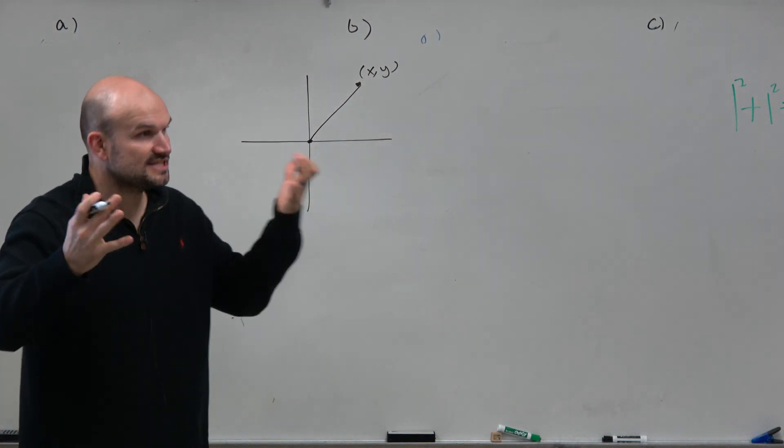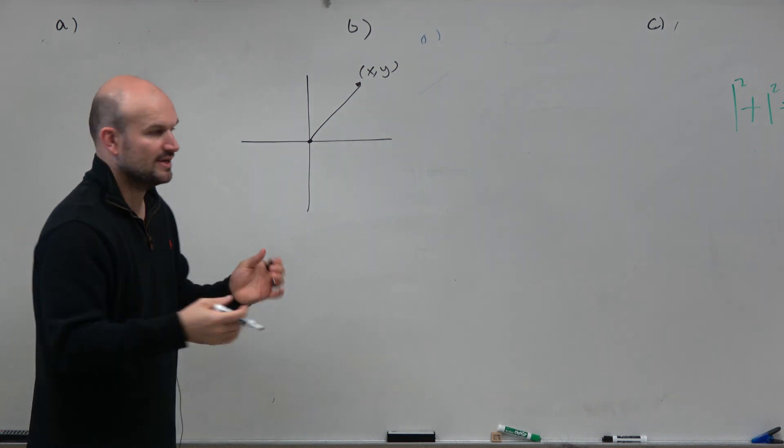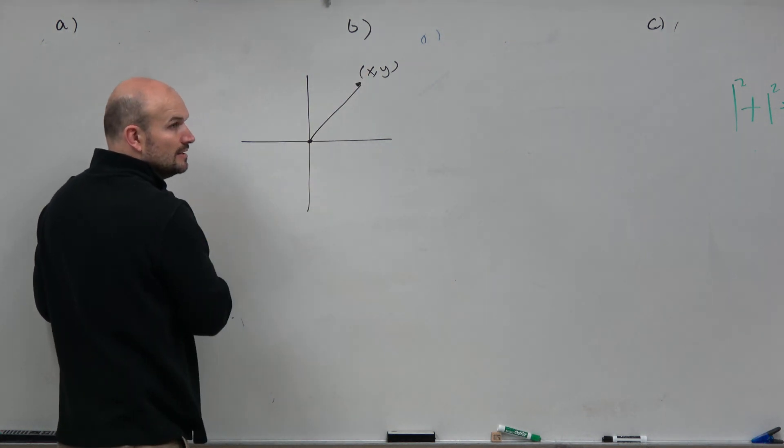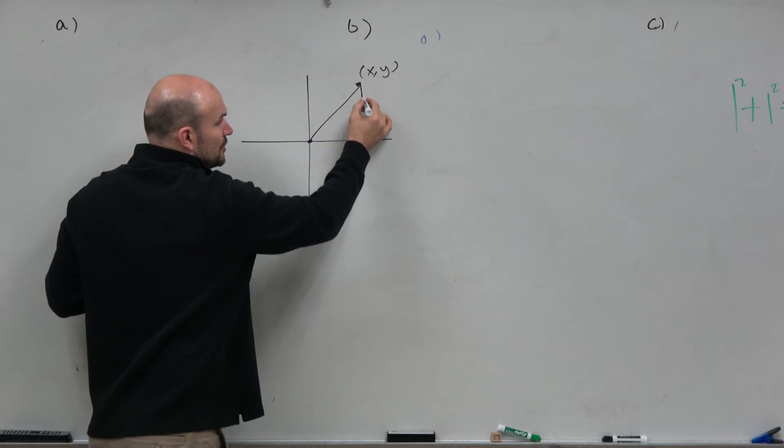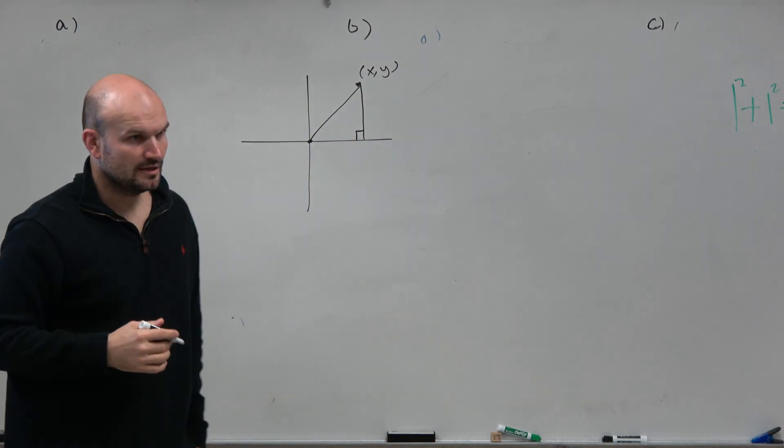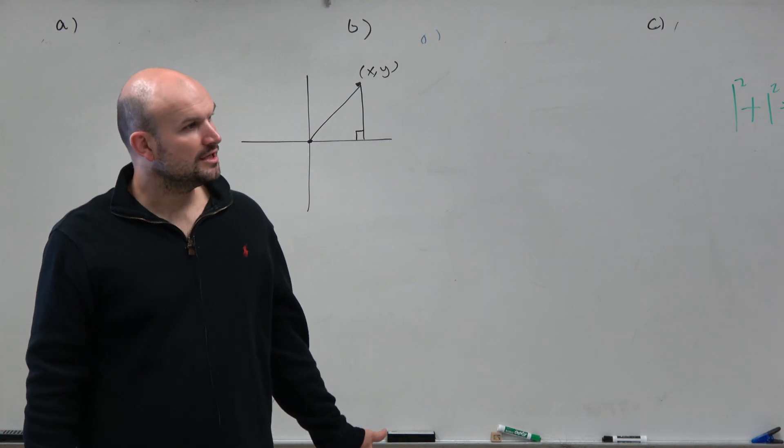Now that's kind of like the distance form. Remember when you guys did the distance form, we did that, something like that? But that is a direct line. Now, from here, though, we can recognize, well, if I just drew a right angle here, that actually creates a triangle, right?